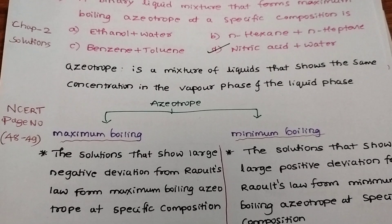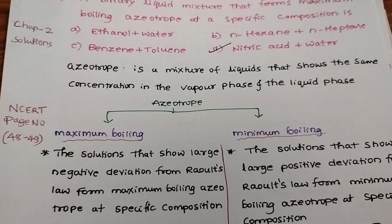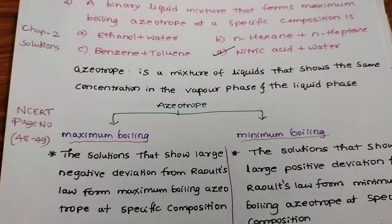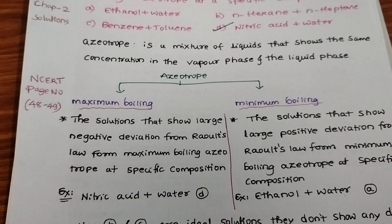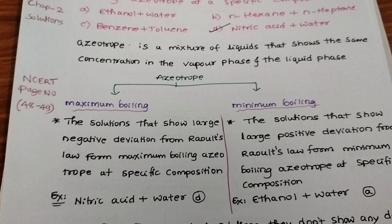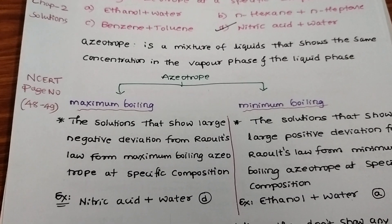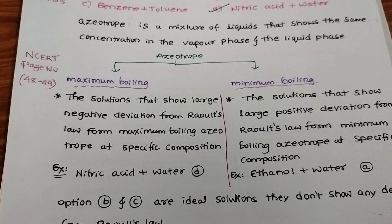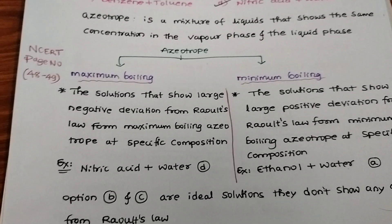First, we need to know what is azeotrope. Azeotrope is a mixture of liquids that shows the same concentration in vapor phase and liquid phase. There are two types of azeotrope: maximum boiling and minimum boiling.